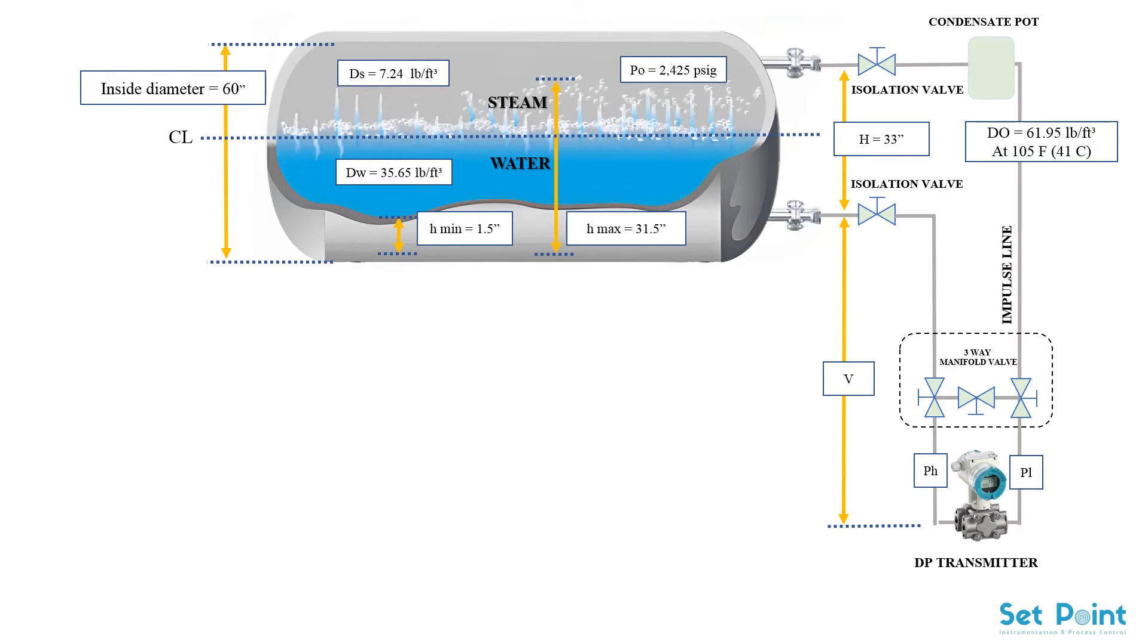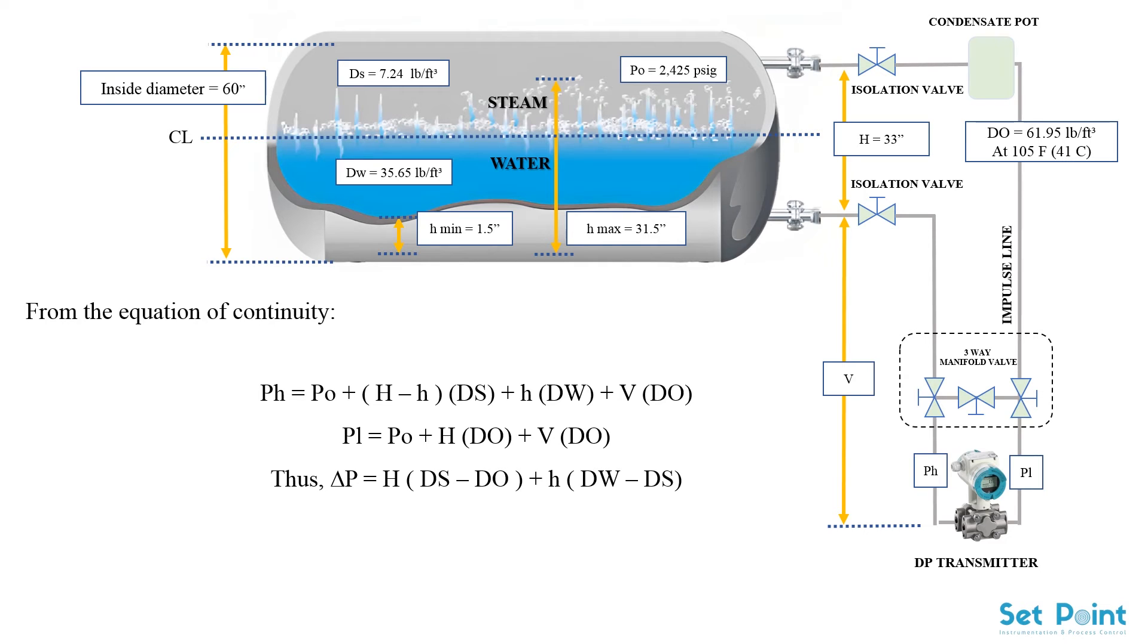Now we will be able to start the calculation. From the equation of continuity, delta P equals H multiply by (DS minus DO) plus H multiply by (DW minus DS).